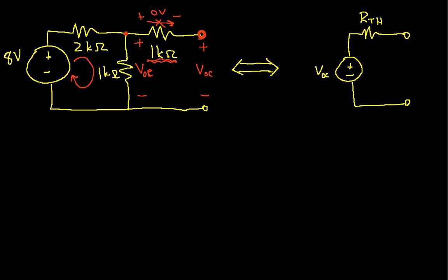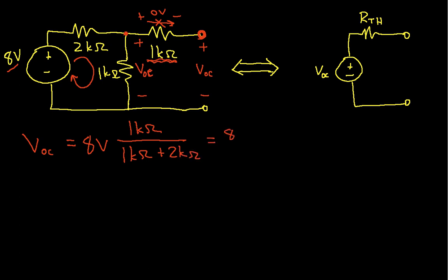So I need to find VOC, and in this case it's going to be pretty easy. I can use a voltage divider because I have this 8 volt source in series with a 2k ohm resistor and a 1k ohm resistor. So VOC equals 8 volts times 1k ohm over (1k ohm plus 2k ohms), which turns out to be 8/3 volts, or 2.667 volts.